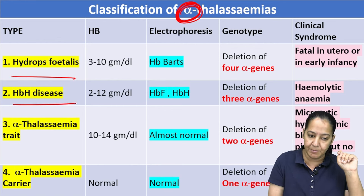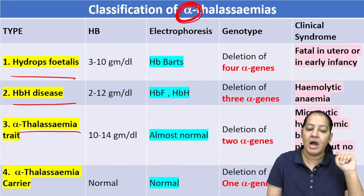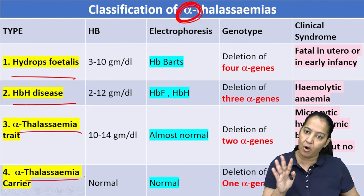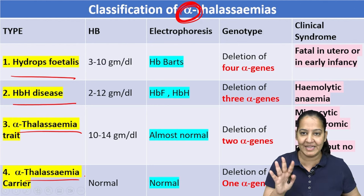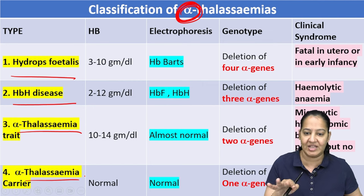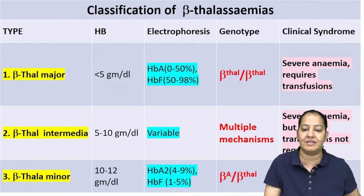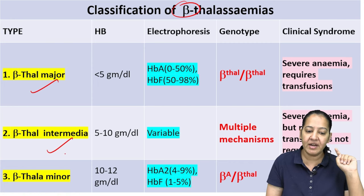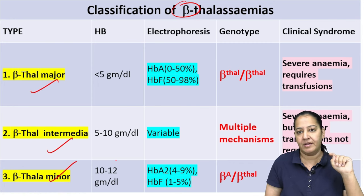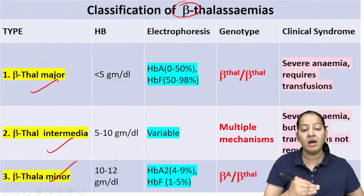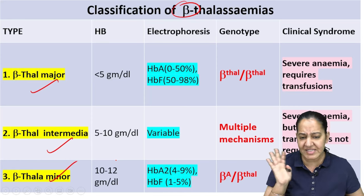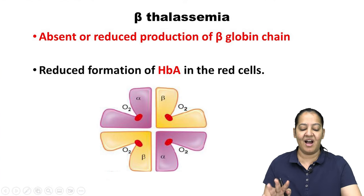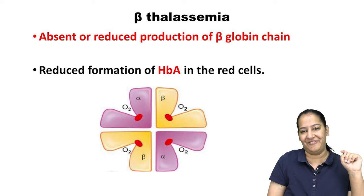The classification: alpha thalassemias are of four types — hydrops fetalis, hemoglobin H disease, alpha thalassemia trait, and alpha thalassemia carrier. Beta thalassemias are of three types — major, intermediate, and minor. We'll discuss all of them in detail.